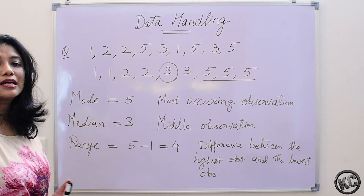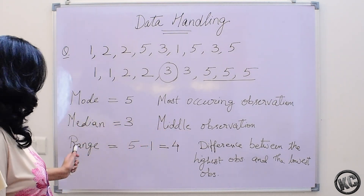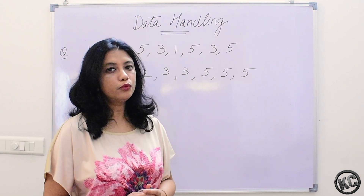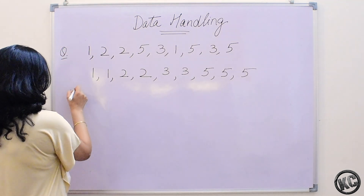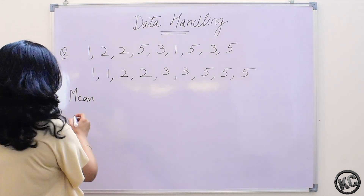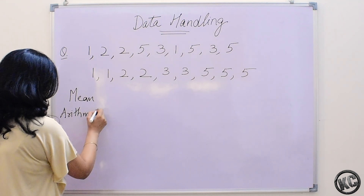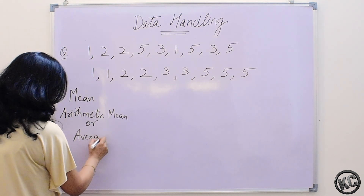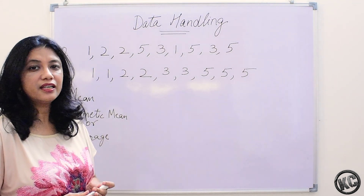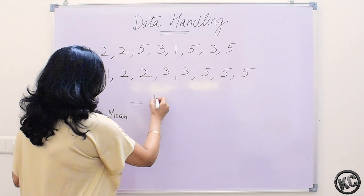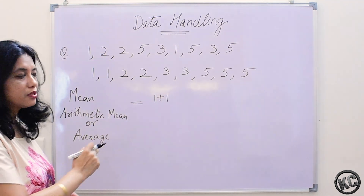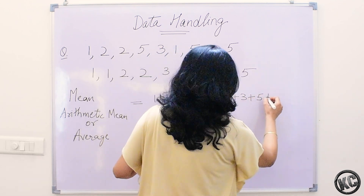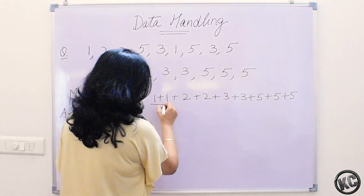Mode is the most occurring observation, median is the middle observation, and range is the difference between the highest observation and the lowest observation. Another important representative value is the mean. It is also called arithmetic mean or average. This is also a very important representative value or measure of central tendency of a data. We will add up all the values.